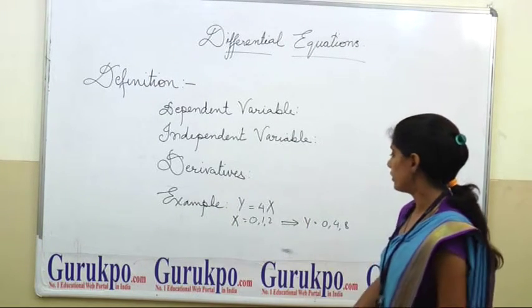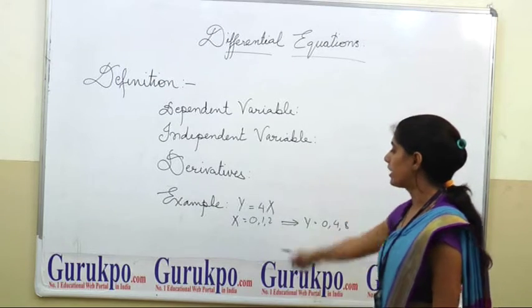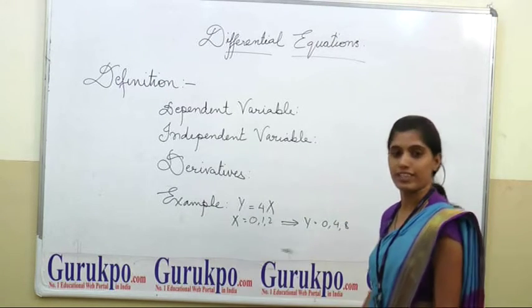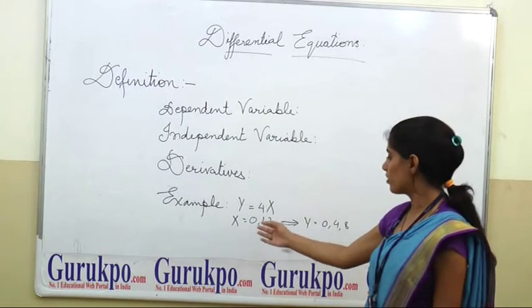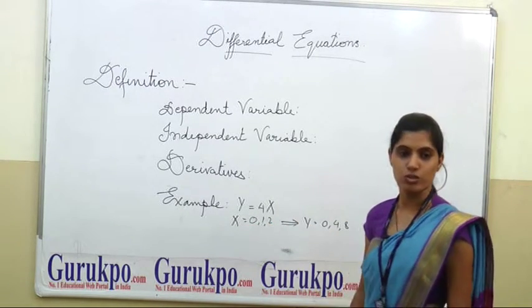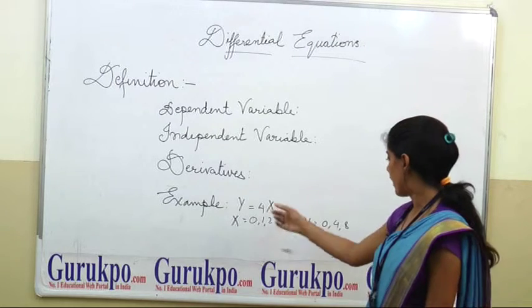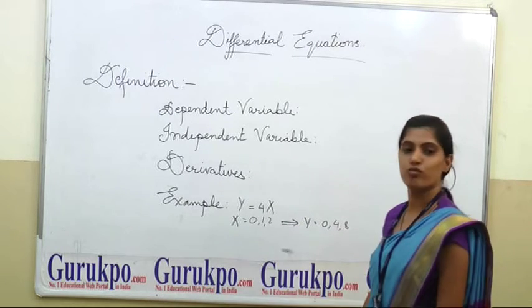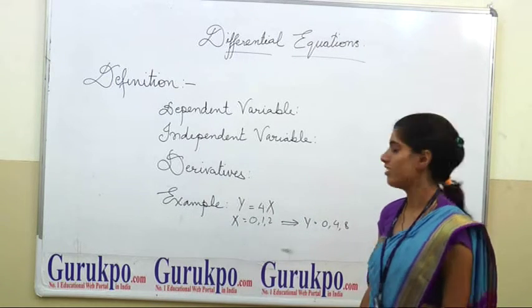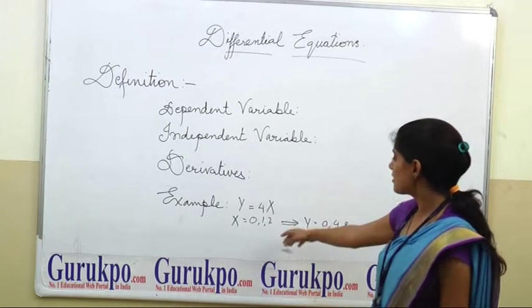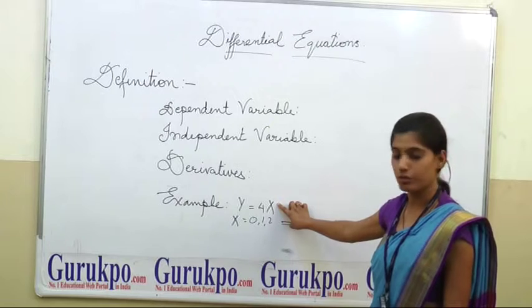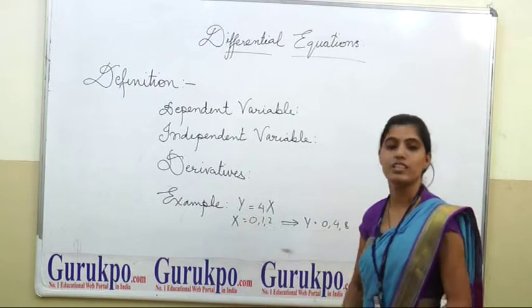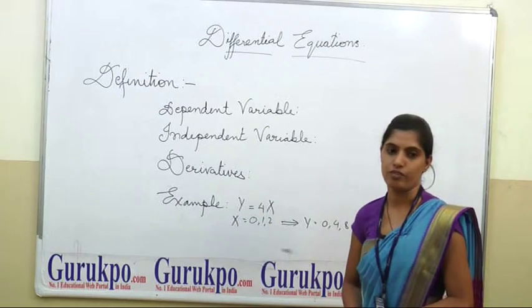For example, y = 4x. Putting x = 0, 1, 2, we get y = 0, 4, 8. Here x is the independent variable and y is the dependent variable.